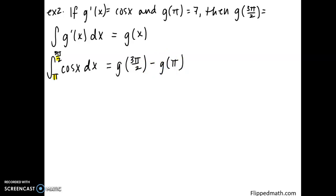And I know that this is equal to, by the fundamental theorem, g of 3 pi over 2 minus g of pi. So once I integrate the function, I know that by the fundamental theorem, I plug in my upper bound, I subtract my lower bound. So g of 3 pi over 2, that's exactly what we're looking for. That's our unknown. G of pi is equal to 7.